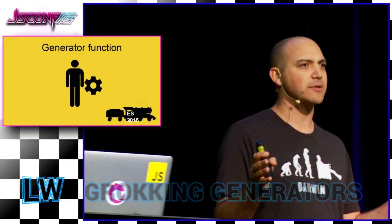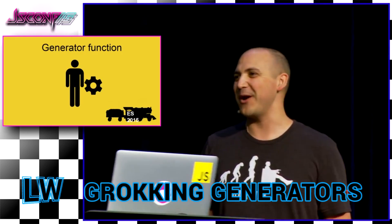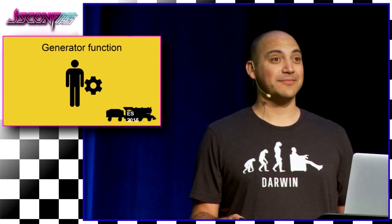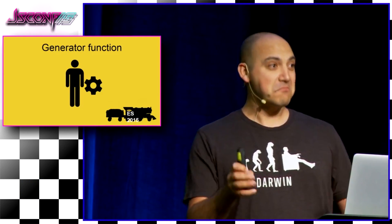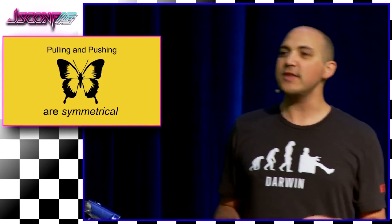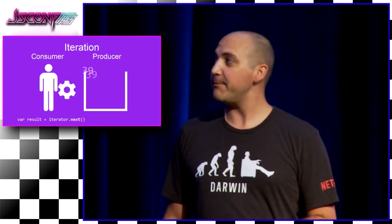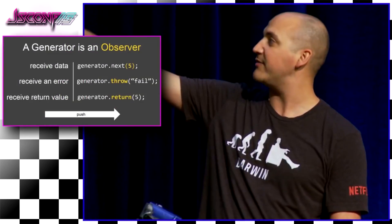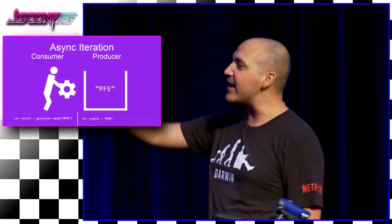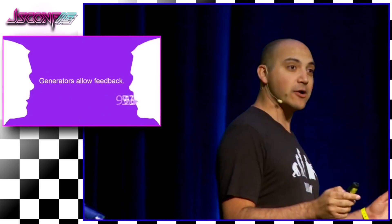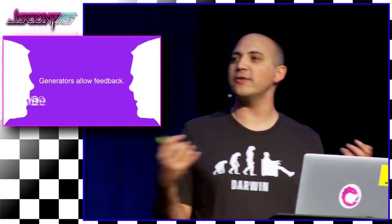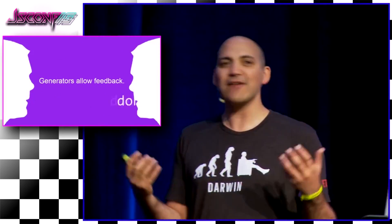ES6 generators will dramatically simplify the way we write asynchronous code, but first we have to understand them. Jafar Hussain breaks down the concepts that power generators, like iterators and observers, and demonstrates the power of asynchronous iteration. You'll want to watch the video a few times to grok the examples, but once it clicks, you're golden.